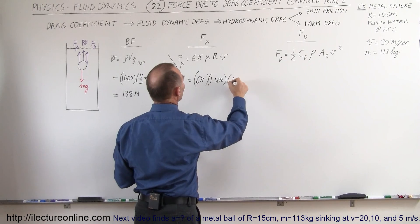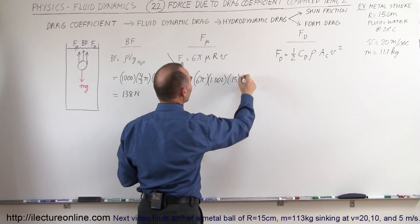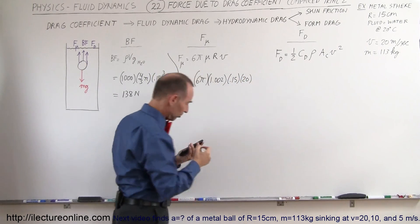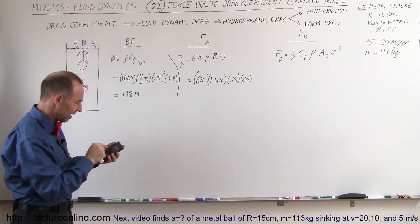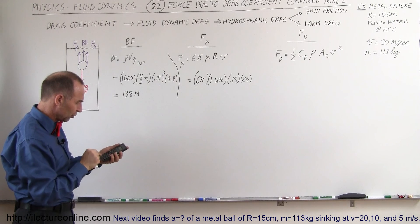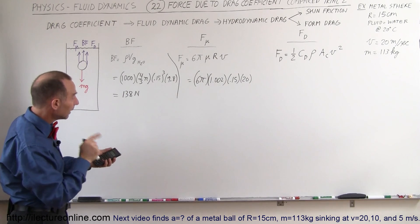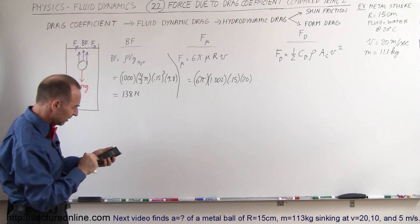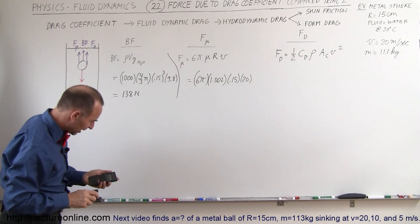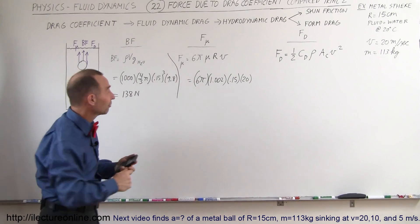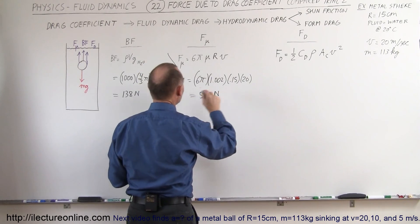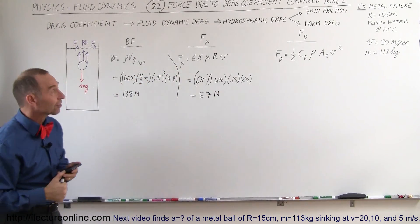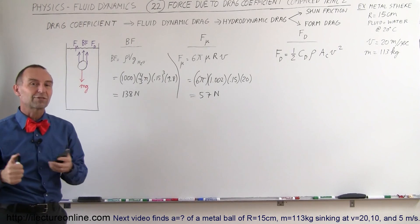The radius would be 0.15 and the velocity we said was going to be 20 meters per second. So 6 times π times 1.002 times 0.15 times 20, and we get 56.7, or let's call it 57 Newtons. So you can see that here the buoyancy force is even a larger factor than the forces due to the viscosity of the fluid.